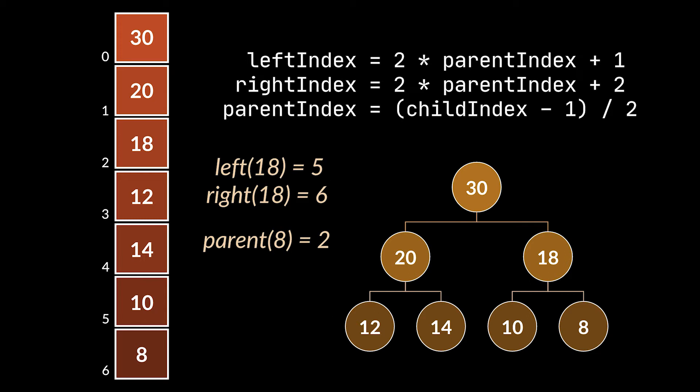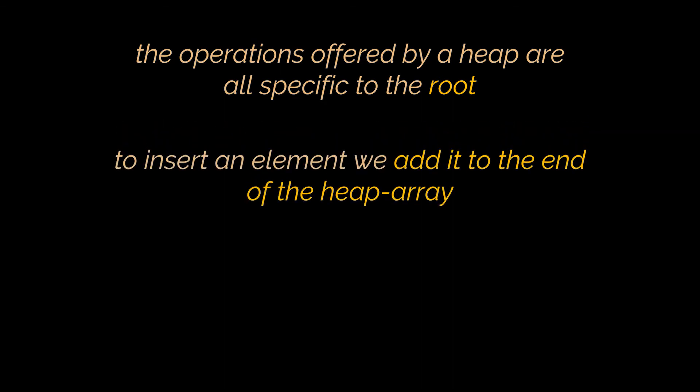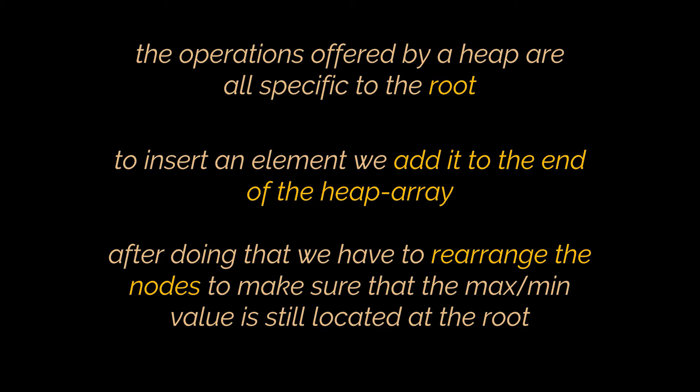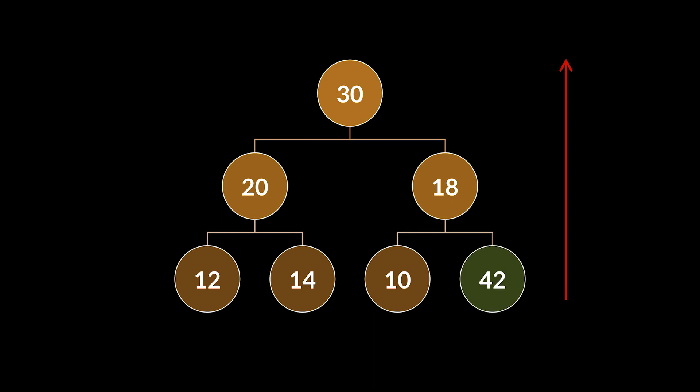The operations offered by a heap are all specific to the root node. We may retrieve the root node — the node with the highest value in a maximum heap, or the smallest value in a minimum heap. While inserting an element, we insert the value at the end of our heap array. However, after the insertion we have to adjust our tree by moving nodes around to make sure the maximum value is still at the root. This adjustment is done by moving from bottom to top, starting at the node we just inserted until we reach the root. The inserted node is compared to its current parent, and if the parent has a bigger value than this node, we swap them. This process is then repeated until we reach the root.